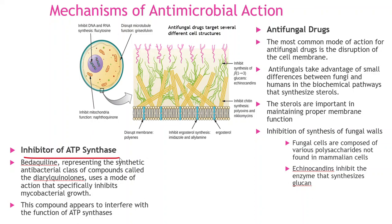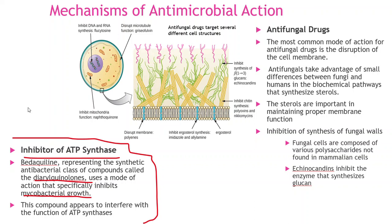Inhibitors of ATP synthase: bedaquiline is a synthetic antibiotic — one of a new class of diarylquinolines — specifically for mycobacterium, so think TB. This compound interferes with ATP synthase, the enzyme that uses the energy from nutrients to attach the third phosphate group to ADP, making ATP. Without this functioning, the bacteria essentially starves of energy.